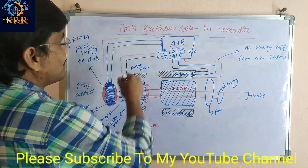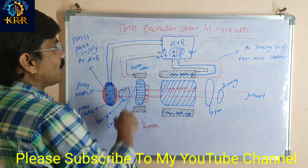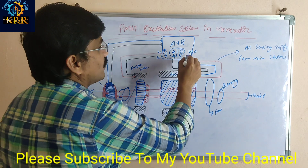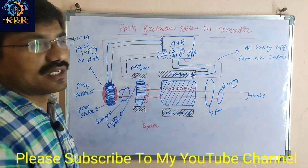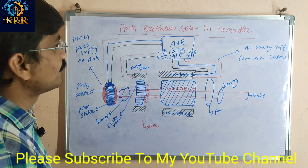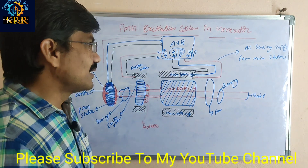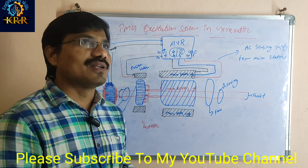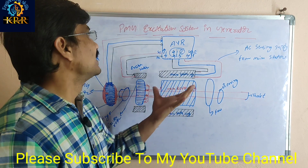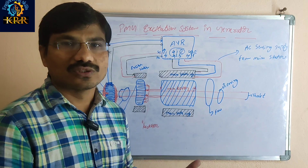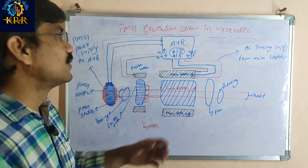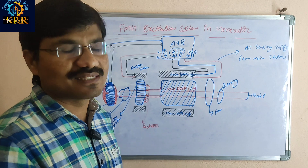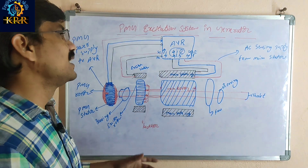After the voltage reaches 415 volts, if it rises further to 420 volts, the AVR reduces excitation — under-excitation — meaning low power is given, low flux is generated, and the final output voltage is reduced back to 415 volts. Finally, both the self-excitation system and the PMG excitation system are mainly used in generators.